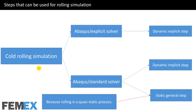For cold rolling simulation, you can use both Abaqus Explicit and Abaqus Standard solvers. If you want to use Abaqus Explicit, you must use the dynamic explicit step. If you want to use Abaqus Standard, you must use the dynamic implicit step or static general step. You can use the static general step because rolling is a quasi-static process.